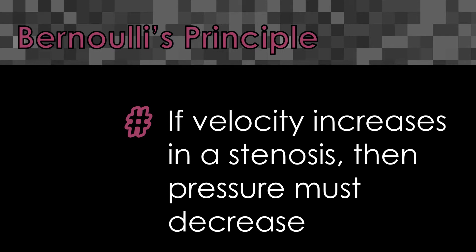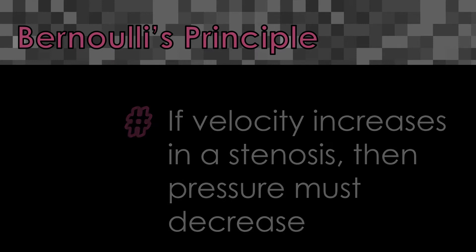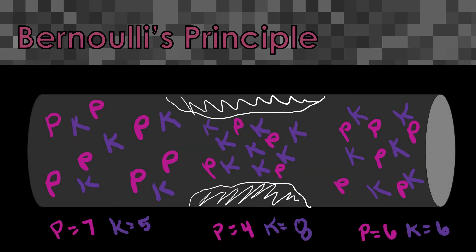Bernoulli's principle combines these two ideas to describe flow in the stenosis. It takes the continuity rule one step further to say that if velocity increases, then there must be a pressure decrease in the stenosis. Pressure is a type of energy, and to increase the energy in a stenosis to make more velocity, that pressure energy has to be converted into more kinetic energy. This satisfies both the conservation of energy and the continuity rule. Before the stenosis, pressure energy equals 7 and kinetic energy equals 5, for a total of 12. Once blood flows into the stenosis, velocity increases — kinetic energy rises to 8 and pressure energy drops to 4, still equaling 12.